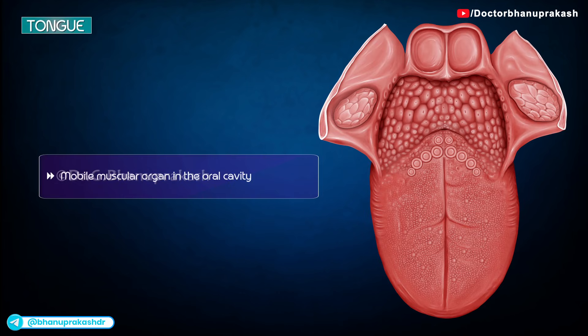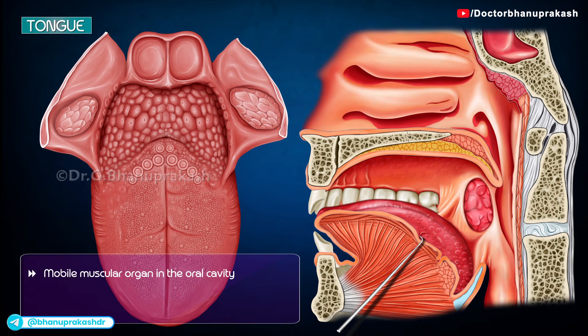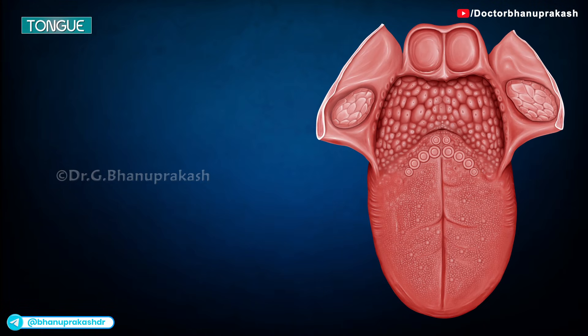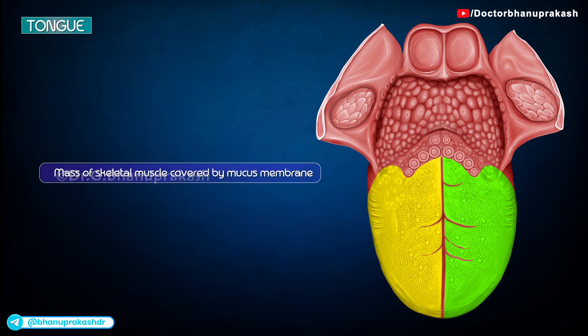The tongue is a mobile muscular organ located in the oral cavity, which bulges upwards from the floor of the mouth, and its dorsal part forms the anterior wall of the oropharynx. It is basically a massive skeletal muscle covered by mucous membrane. The massive muscle is separated into right and left halves by a fibrous septum in the midline.